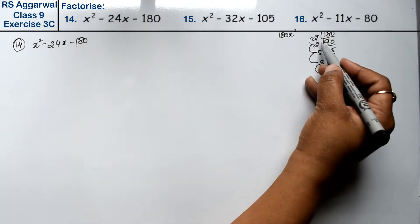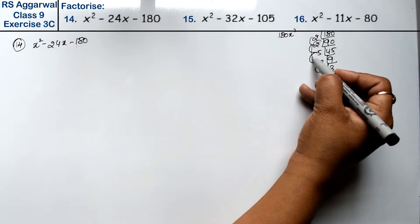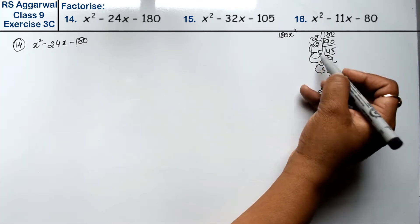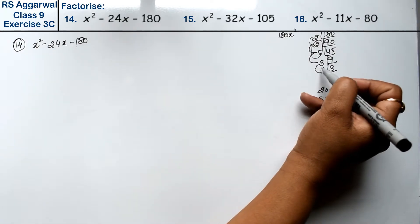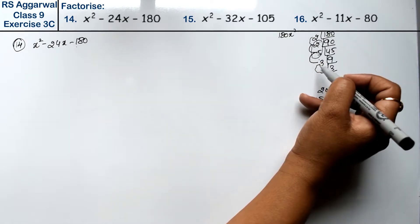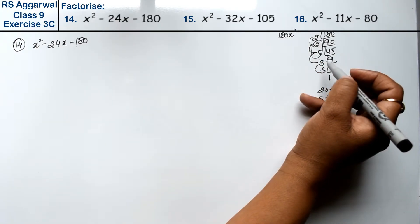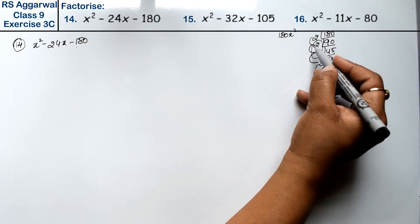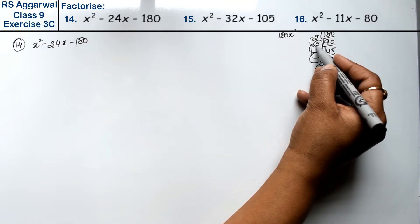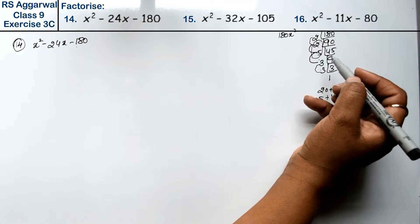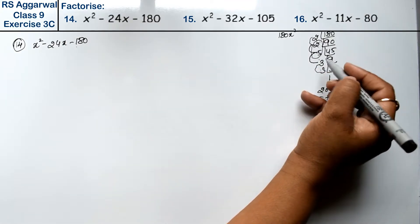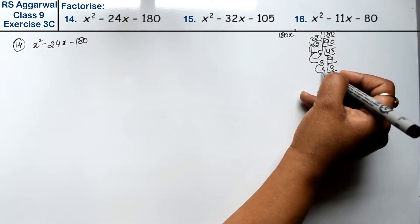Let's see: 5 twos are 10 and 3 threes are 9, 9 twos are 18 — this will not work. Now, 3 twos are 6 and 3 fours are 12, then 3 threes are 36.